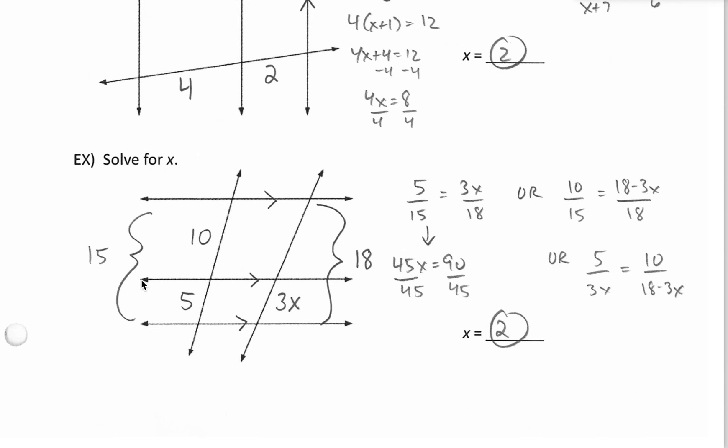So let's just compare those. So 5 to 15, bottom piece to total length. So compare that to the bottom piece on the other side, 3X, compared to the total length of 18. Now we could cross multiply. 15 times 3X is 45X. 5 times 18 is 90. We could divide by 45 and find our X value is 2.